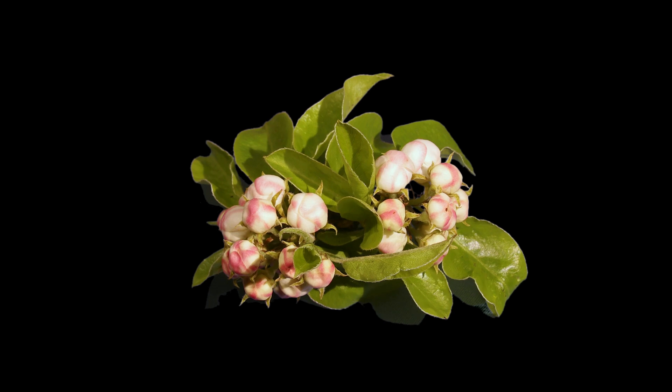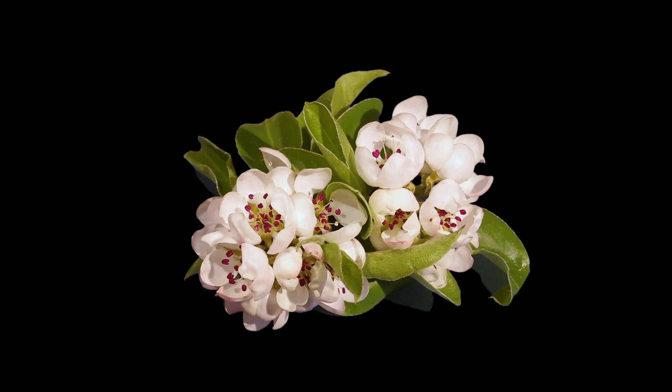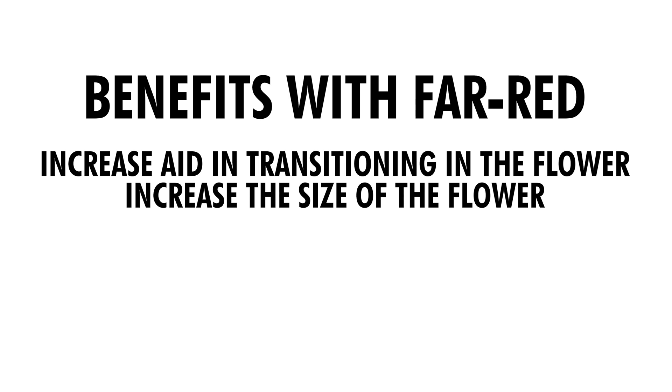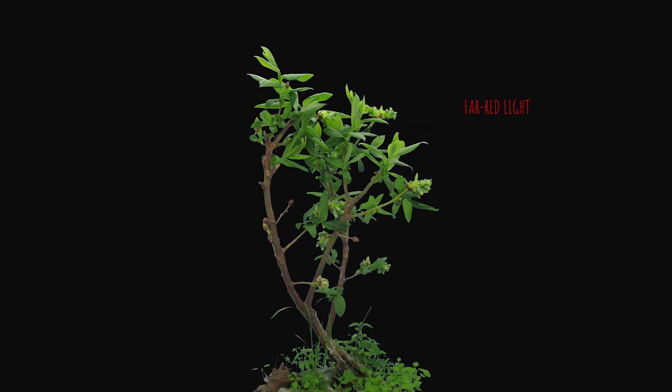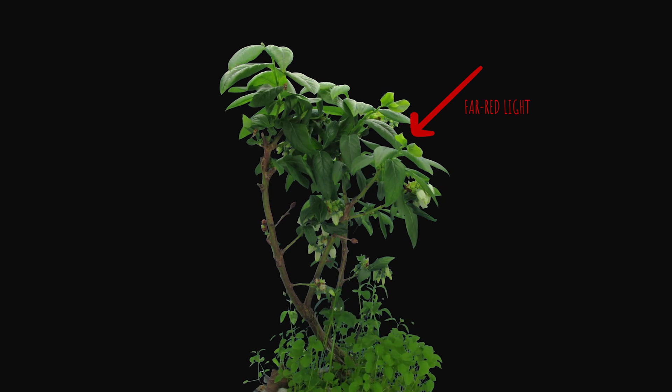Far red provides benefits specifically around flowering. It increases the ability to transition into flower — when you're ready to go to flower, far red efficiently pushes the plant into that stage. The overall size of your flower can increase because the biomass of the plant increases in general. Most importantly, far red increases overall spectrum absorption into the plant. Studies show far red has a much deeper penetration rate into the leaf than other wavelengths of light, making it critical for overall photon absorption.